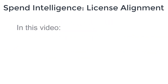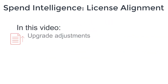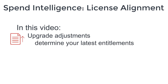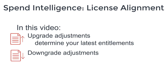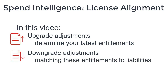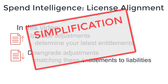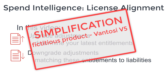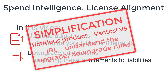In this video we're first going to think about upgrade adjustments — how to determine your latest license entitlements — and then we will think about downgrade adjustments, making these entitlements match your actual liabilities. To simplify our discussions we're going to consider a fictitious software application called Vantosi version 5, so that we don't need to worry about specific rules for a real product. When you do this for a real product you'll need to make sure you understand what the rules are for upgrades, downgrades, and so on.